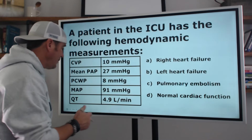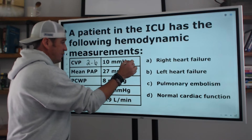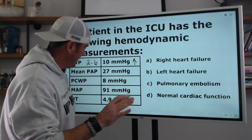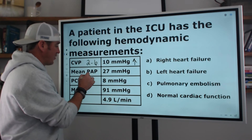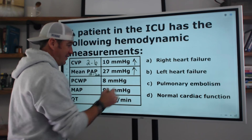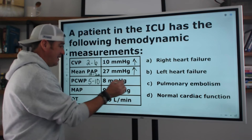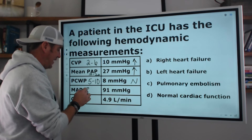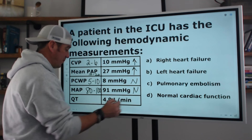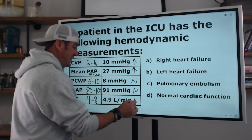So now let's go back and look at our values and see if we can identify the break. CVP is 10 — remember CVP was 2 to 6, so this is elevated. Mean pulmonary artery pressure was 10 to 20, and at 27 this is elevated. PCWP was 5 to 10 — this is normal. Mean arterial pressure was 80 to 100 — this is normal. Cardiac output, 4 to 8 liters per minute — this is normal.